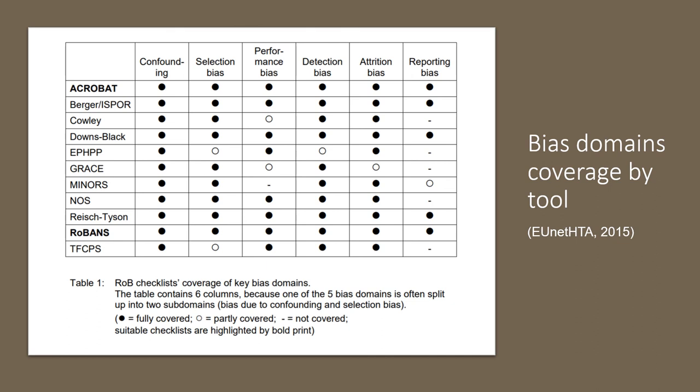Different tools also cover different types of bias. By looking at a comparison table, you can see which bias types each QA tool covers — black dots indicate a bias type is covered, white dots indicate it is not. Tools such as ACROBAT, BERGER, ROBINS, and RACE/TYSON all have good coverage of different types of bias.